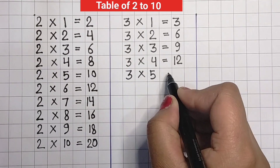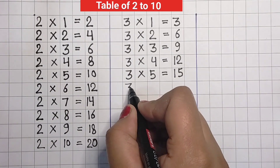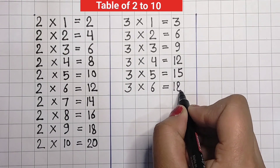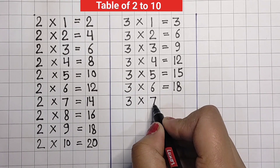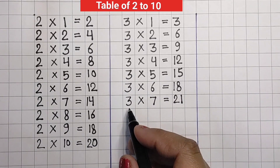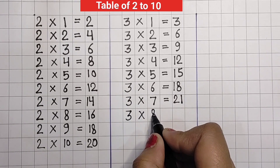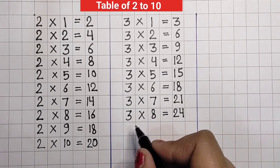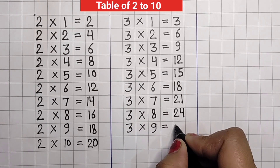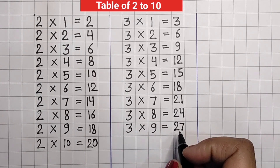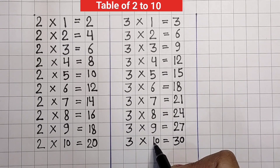Three, five jaa, fifteen. Three, five jaa, fifteen. Three, six jaa, eighteen. Three, six jaa, eighteen. Three, seven jaa, twenty-one. Three, seven jaa, twenty-one. Three, eight jaa, twenty-four. Three, eight jaa, twenty-four. Three, nine jaa, twenty-seven. Three, nine jaa, twenty-seven. Three, ten jaa, thirty. Three tens are thirty.